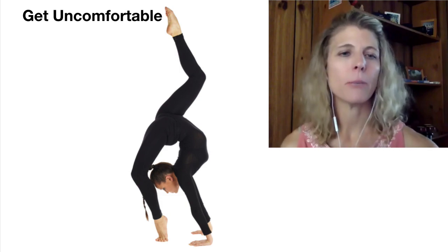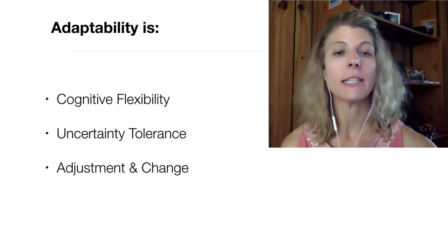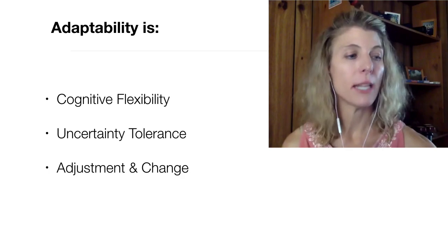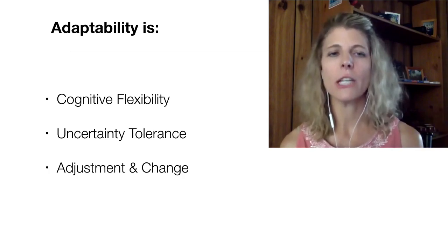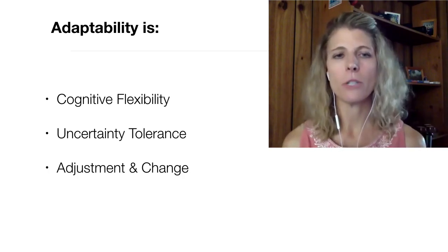So there are three bullet points here: cognitive flexibility, uncertainty tolerance, and adjustment and change. So when we think about cognition, it's how adaptable is our thought process? Are we rigid or are we more creative and open to new ideas?